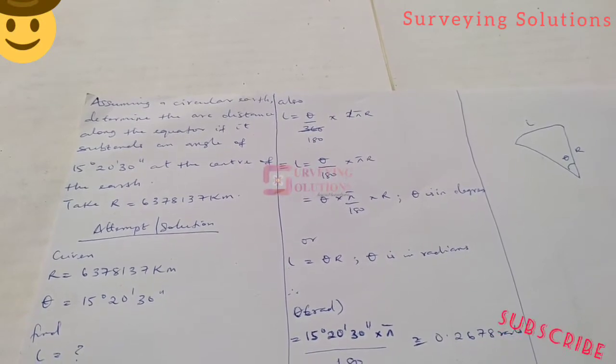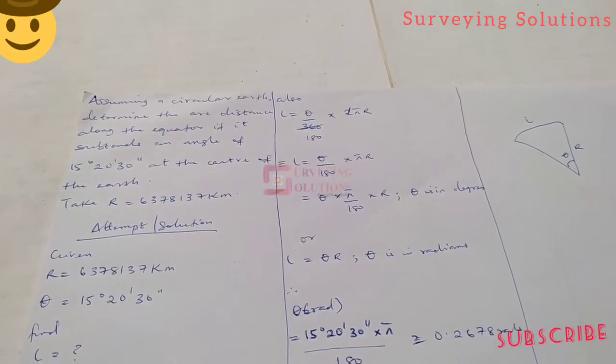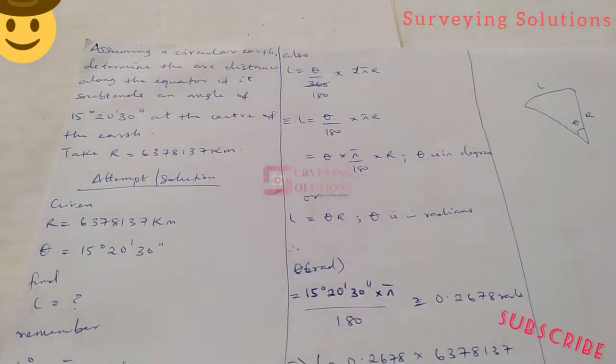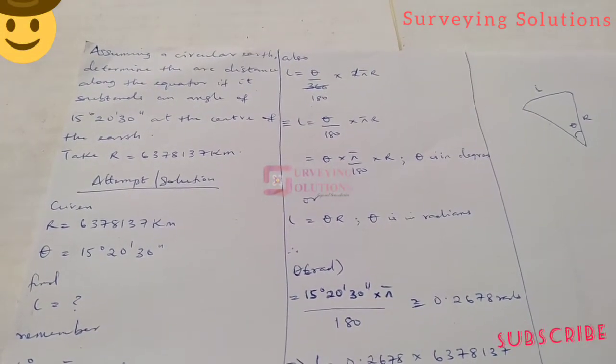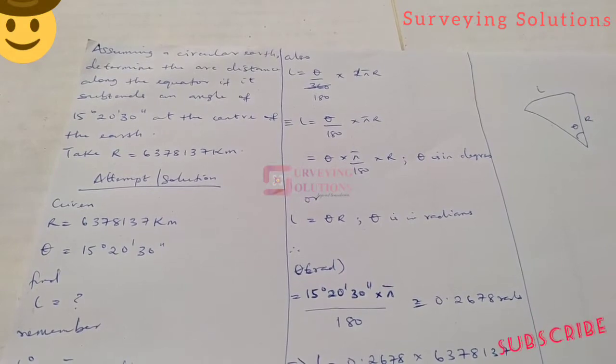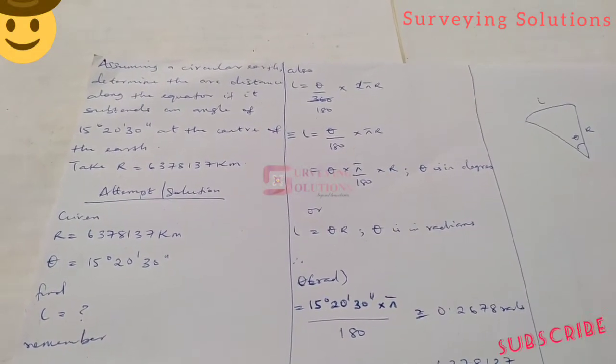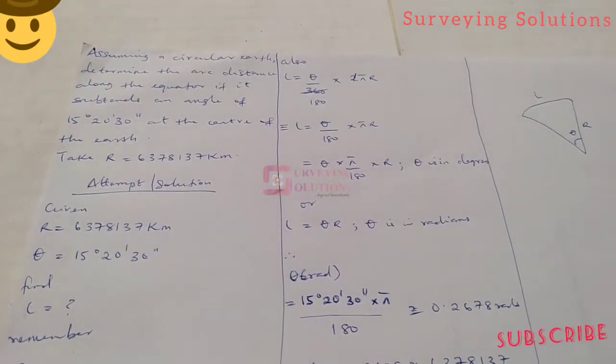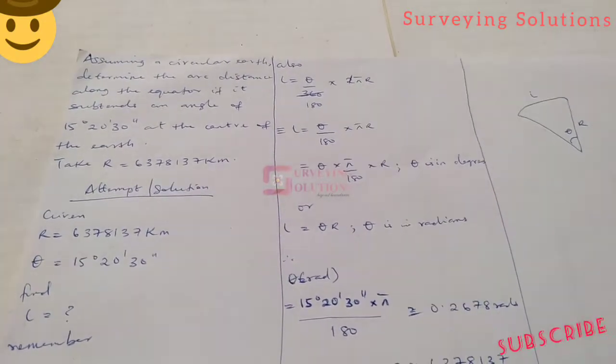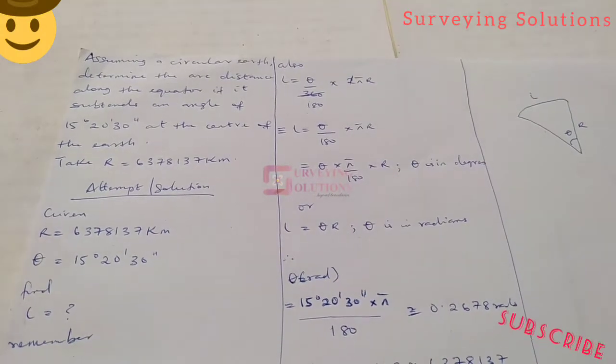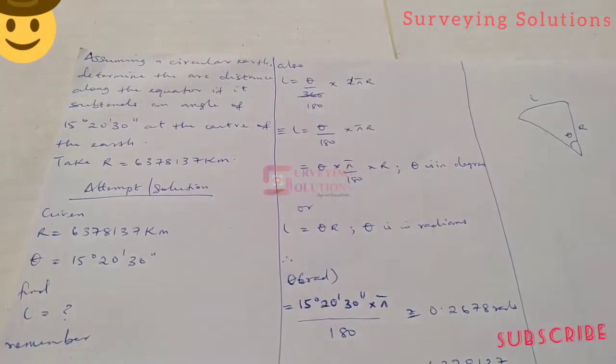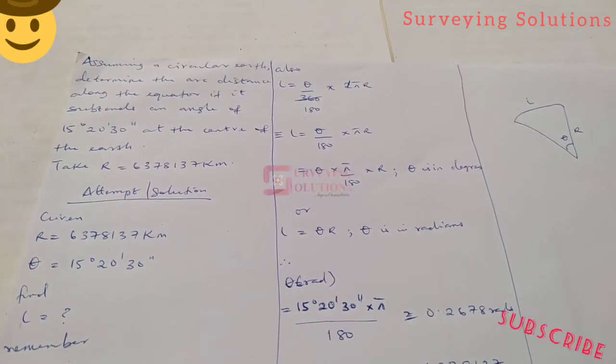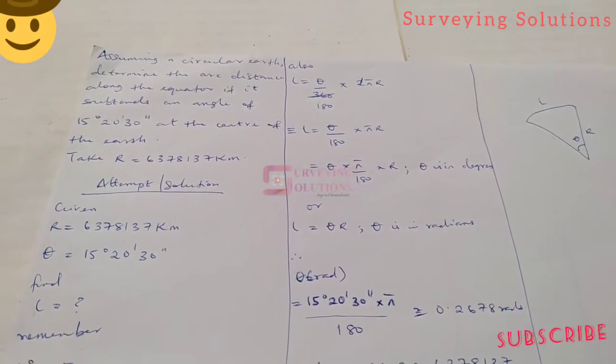The question is: assuming a circular earth, determine the distance along the equator if it obtains an angle of 15 degrees 20 minutes 30 seconds at the center of the earth. Take the radius of the earth to be 6378.137 kilometers.